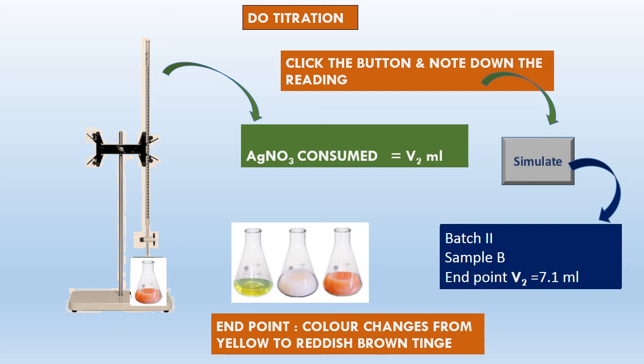Batch 2 students: upon simulation you have got V2 = 7.1 ml. Batch 3 students: upon simulation we have got V2 = 7.5 ml — Sample C. Please note down Sample C, V2 = 7.5 ml.